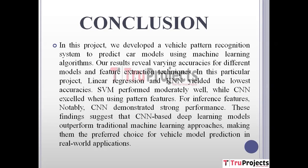However, CNN excelled using pattern features and remarkably, CNN also showed strong performance with inference features. The results indicate that CNN-based deep learning models outperformed traditional machine learning methods, making them the preferred choice for accurate vehicle model prediction in real-world applications.